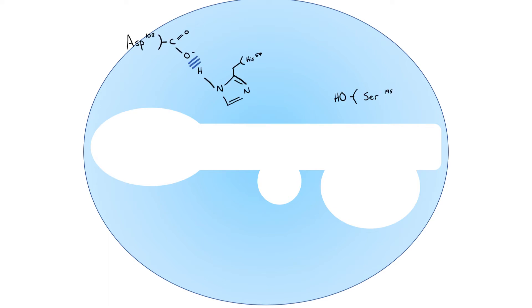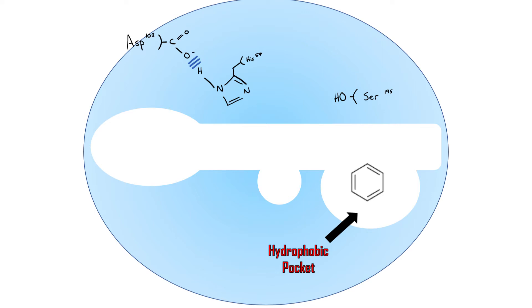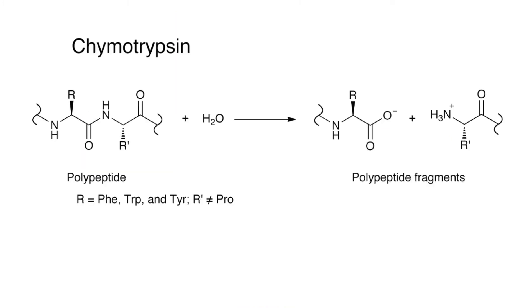Here we have our chymotrypsin — this is our enzyme. Notice we have a triad of aspartate, histidine, and serine. Aspartate kind of sits off in the distance and cheerleads for the whole reaction. There are two things we need to know: we have our hydrophobic pocket, where our aromatic ring goes — typically found on tyrosine or phenylalanine — and we have our oxyanion hole, which is where our negatively charged oxygen goes. Remember, our goal is simply to cleave this polypeptide chain, and it takes seven reactions to do it.